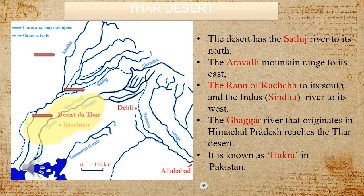The Thar Desert spreads across Rajasthan, Haryana and some parts of Gujarat. A part of the desert lies in today's Pakistan. The desert has the Satlaj River to its north, the Aravli mountain range to its east, the Rann of Kutch to its south and the east of the Sindhu River to its west. The Ghaggar River, which originates in Himachal Pradesh, reaches the Thar Desert and is known as Hakra in Pakistan.